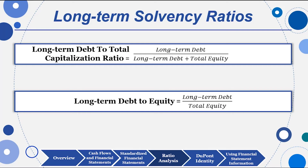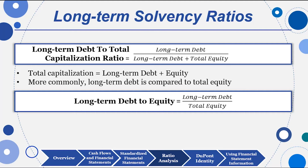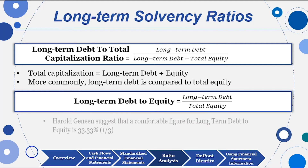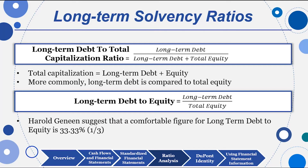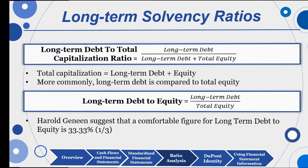Another long-term solvency ratio is long-term debt to total capitalization: total long-term debt over long-term debt plus total equity. The more common ratio in corporate America is long-term debt-to-equity. Harold Geneen at ITT found that keeping long-term debt-to-equity at 0.33 times — or one-third — allowed him to easily access capital markets for debt or equity issuances without substantial review, because he was managing that ratio very carefully.